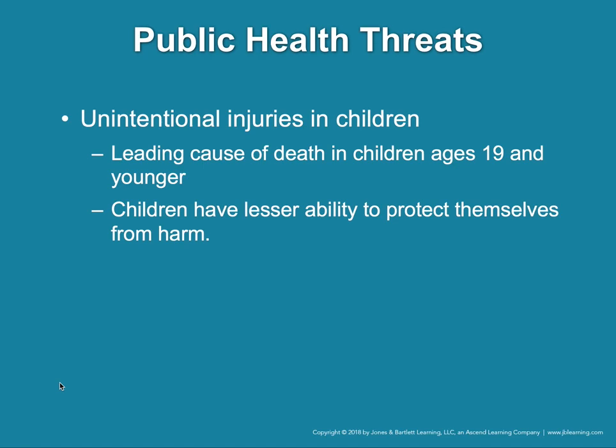Unintentional injuries are the leading cause of death in children ages 19 and younger. Anybody under the age of 20, the leading cause of death is unintentional injury. This makes sense because when you're under the age of 20, you don't have as many comorbidities as an older person — such as heart disease, atherosclerosis, coronary artery disease, diabetes, or hypertension.